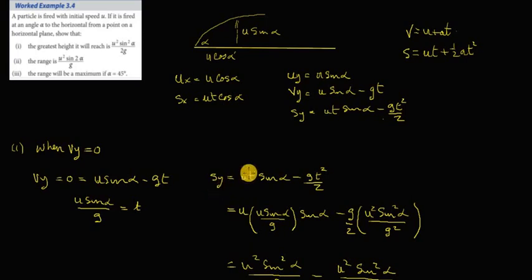Substitute that into s of y, so we're going to have ut sine alpha minus g t squared over 2, which is s of y, and we substitute our t, our new value for t in. We're going to get this. Okay, so t squared is equal to u squared sine squared alpha over g squared.